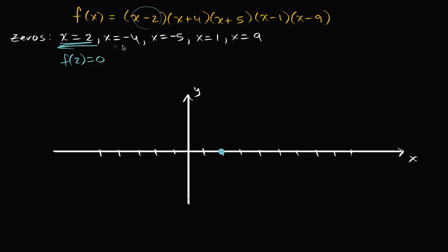Let's do the other ones. x equals negative four — negative one, two, three, four — right over there. x equals negative five. x equals one. And x equals nine.